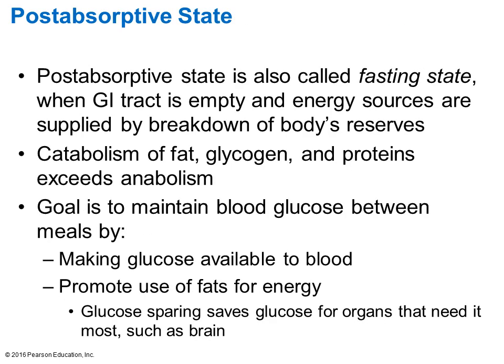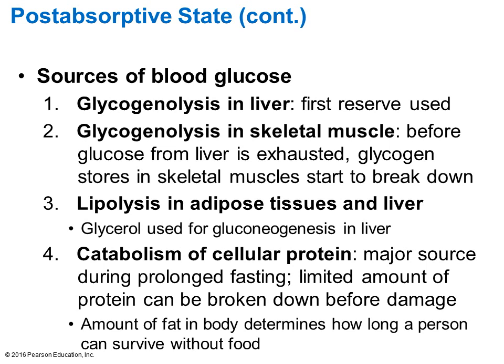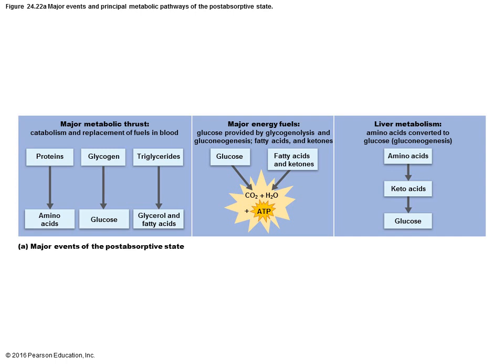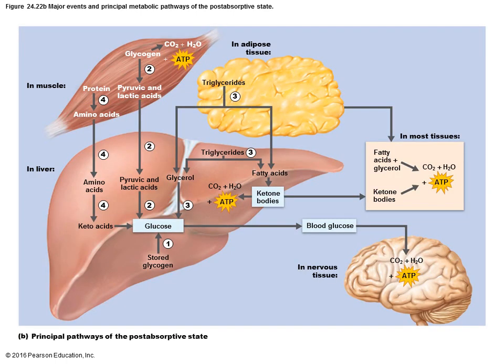In the postabsorptive or fasting state, you've already absorbed everything and are starting catabolic reactions on fats, glycogen, and proteins. The bottom line is to keep a stable blood glucose level. Blood glucose comes first from glycogenolysis in the liver, then skeletal muscle, then lipolysis from adipose tissue and the liver, and finally catabolic processes of cellular proteins.